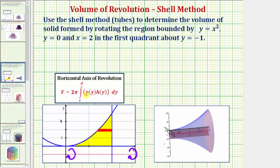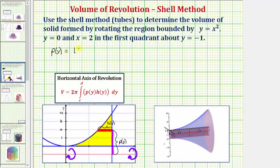Using our rectangle, p(y) is the distance from the rectangle to the axis of rotation. There are actually two components to p(y). First, we have the distance from the axis of rotation to the x-axis, which is always equal to one. Then we have the distance from the x-axis to the rectangle, which is always equal to y as we integrate from zero to four along the y-axis. So the radius function p(y) is equal to one plus y.